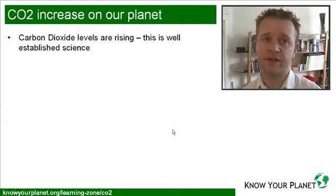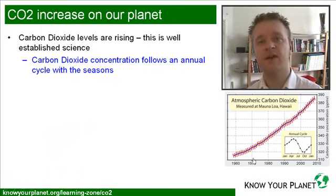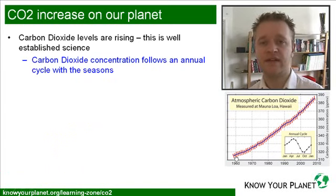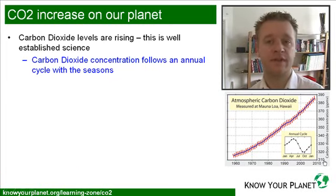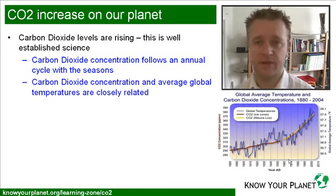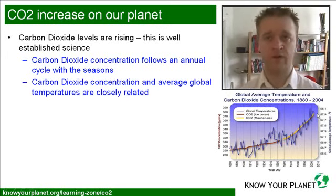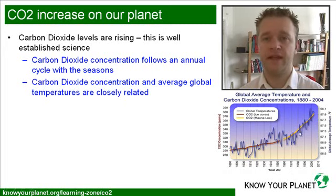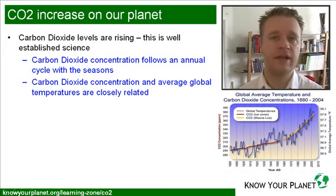Carbon dioxide is increasing on our planet, and this is very well-established science. We have been taking measurements every single year for the last hundred years, and we can see that since 1960 up until projected 2010, the carbon dioxide levels are going to have risen from 310 to 390 parts per million. The temperature is also quite closely correlated to the increase in carbon dioxide. The blue line is the temperature and the yellow line is the carbon dioxide, and there's quite a clear correlation between the two.